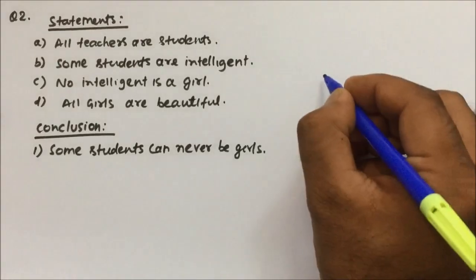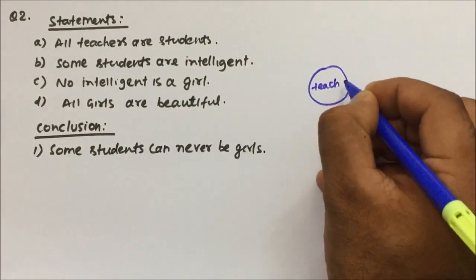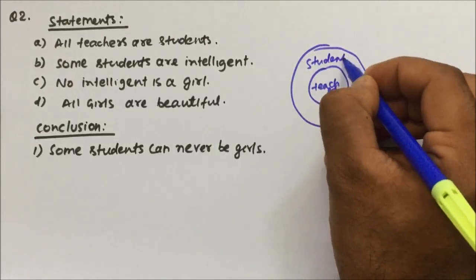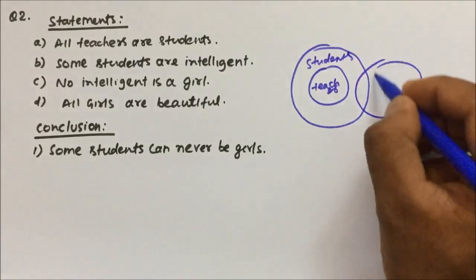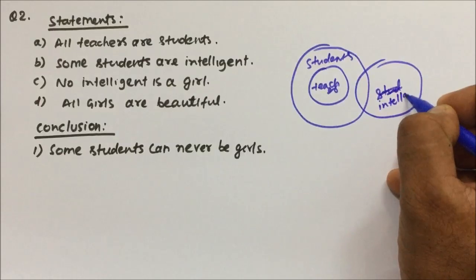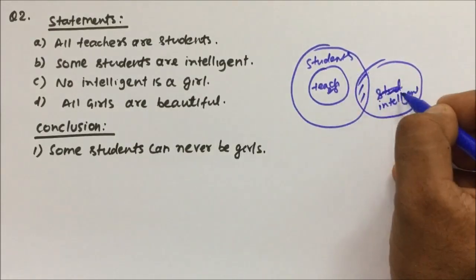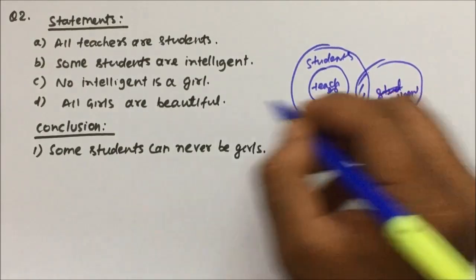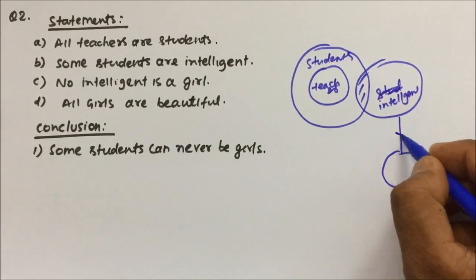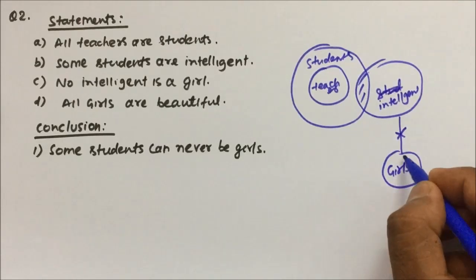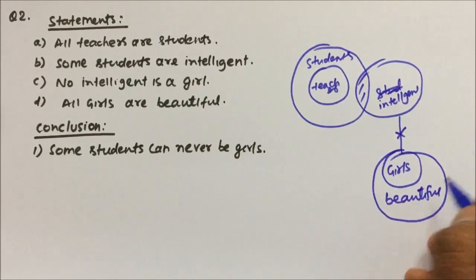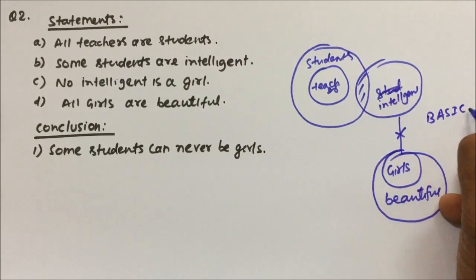Statement 2: All teachers are students. So whatever teachers are there, all are students. And some students are intelligent, so some students will be intelligent — both are sharing. No intelligent is a girl, so intelligent and girl have no relation. And all girls are beautiful, so all girls will be inside beautiful. This is my basic Venn diagram.